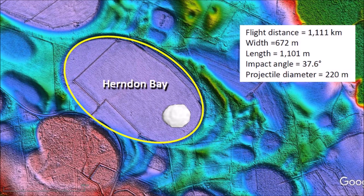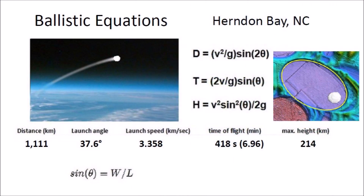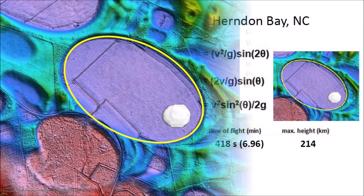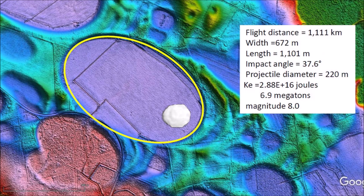Herndon Bay is located 1,111 kilometers from Lake Michigan, which is assumed to be the point from which the ice boulder that made this basin was launched. The basin has a width of 672 meters and a length of 1,101 meters; the width-to-length ratio corresponds to an impact angle of 37.6 degrees. The diameter of the glacier ice projectile is estimated to be 220 meters, which is one-fifth of the basin length. Ballistic equations indicate the glacier ice boulder was launched at a speed of 3.358 kilometers per second, had a flight time of 6.96 minutes, and reached a height of 214 kilometers above the Earth's surface — a suborbital spaceflight in the vacuum of space. The kinetic energy of the impact was equivalent to 6.9 megatons of TNT, which would have caused seismic vibrations of magnitude 8.0.